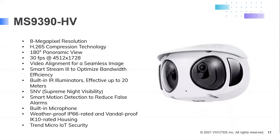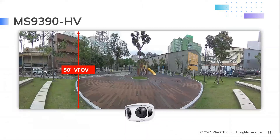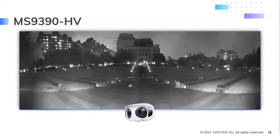The MS9390 is one of the most efficient panoramic cameras in surveillance. It offers 8 megapixel resolution, 180 degrees of viewing, H.265 compression with SmartStream 3 for reduced bandwidth and storage, 30 frames per second, video alignment for a seamless image of the two lenses, built-in IR illuminators up to 65 feet or 20 meters, smart motion detection to reduce false alarms based around humans and objects, and Trend Micro security. The MS9390 provides a 50 degree field of view, more than traditional multi-sensor cameras, and 180 degree IR illumination to ensure 24/7 panoramic surveillance.